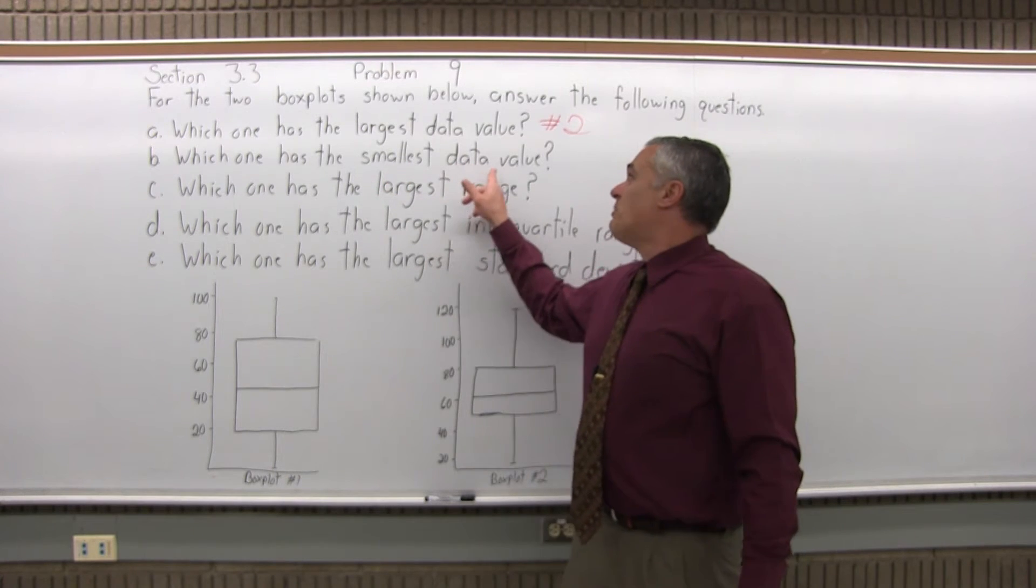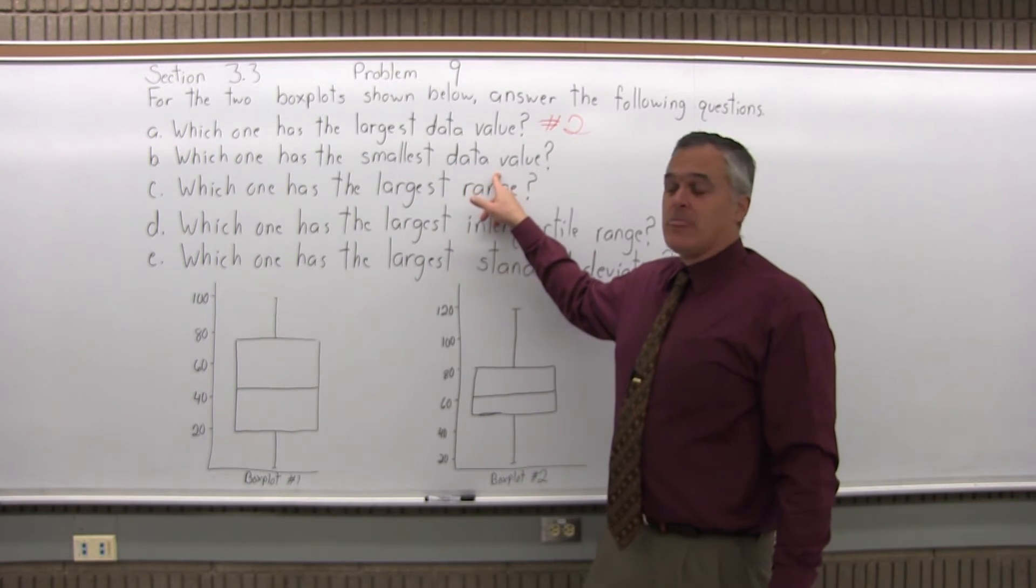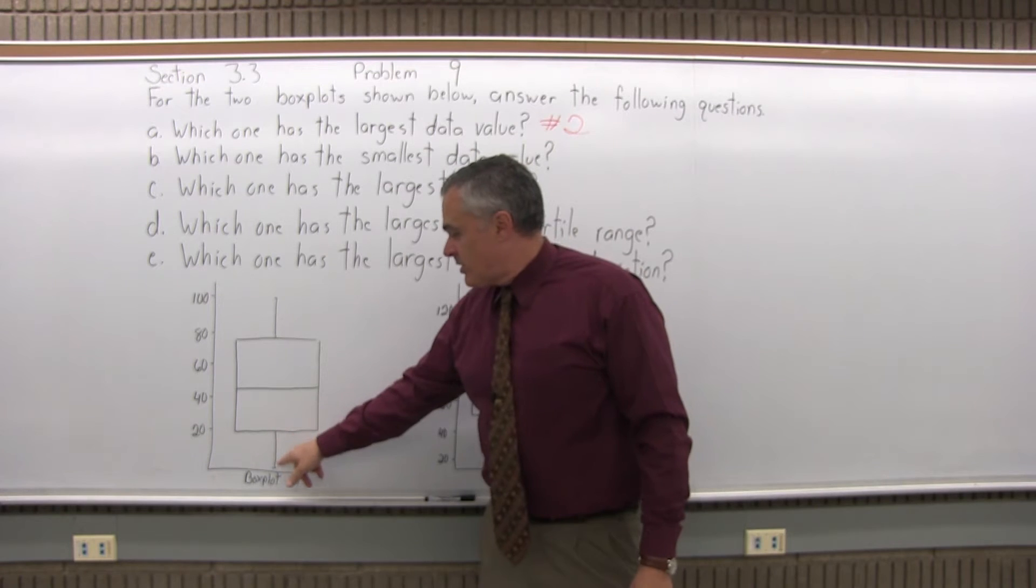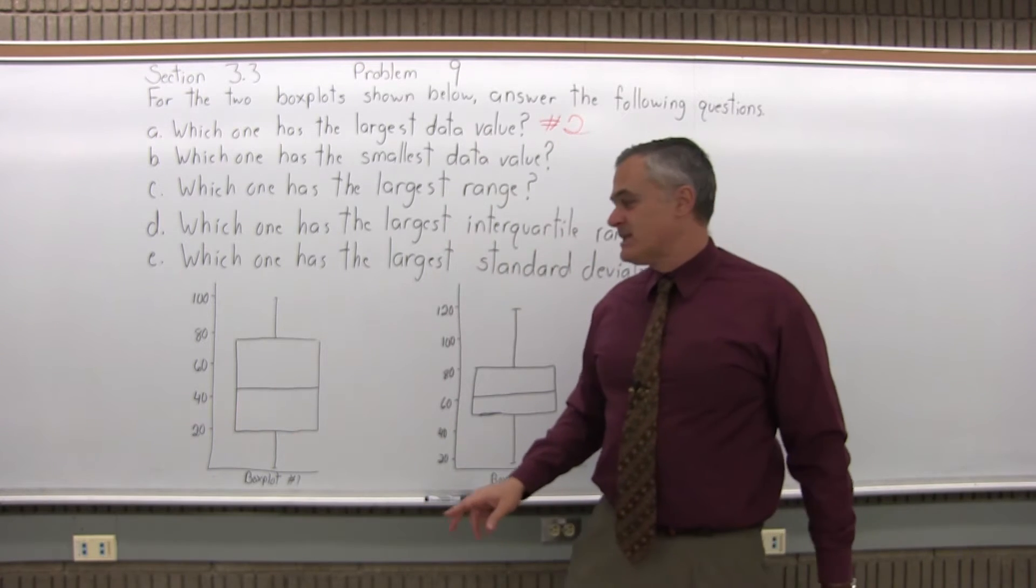Which one has the smallest data value? Now, the line coming out of the bottom of the box on your box plot goes to the smallest data value.